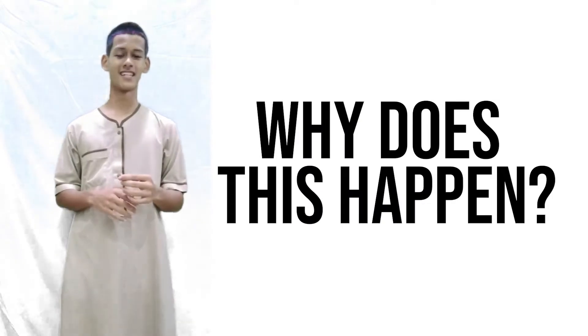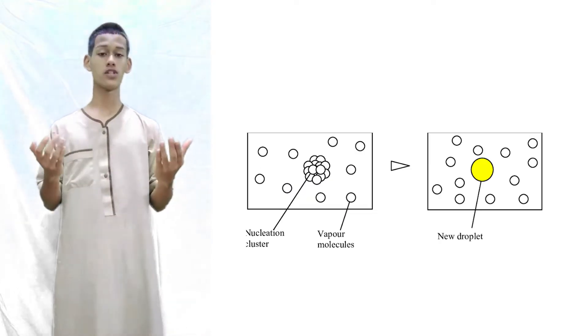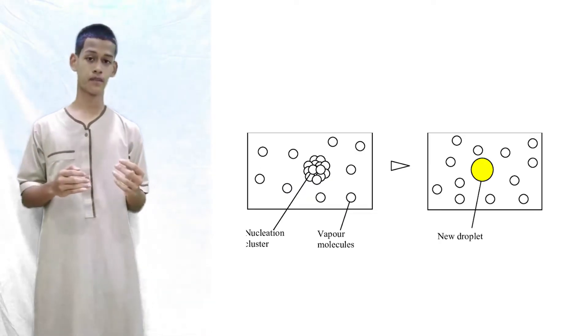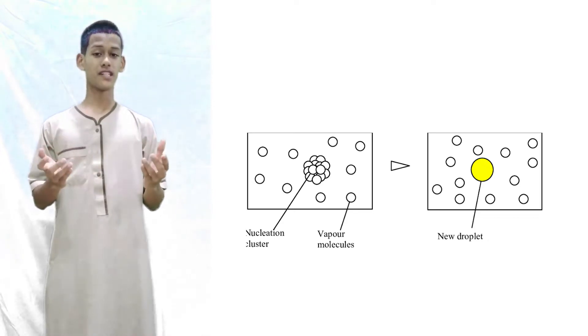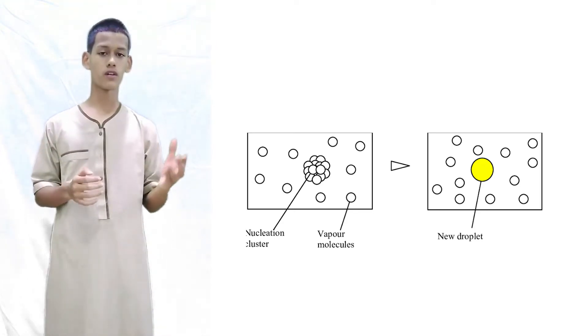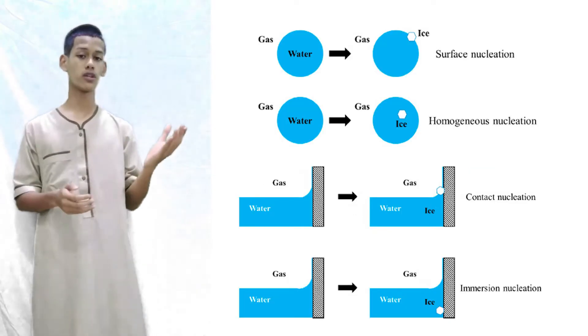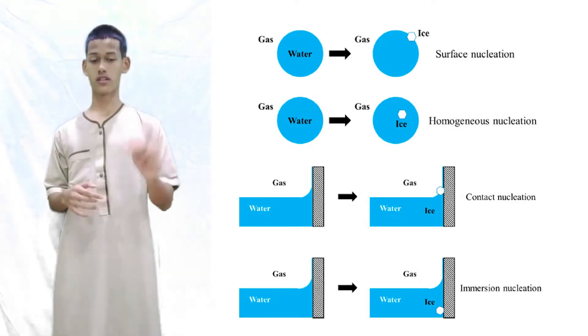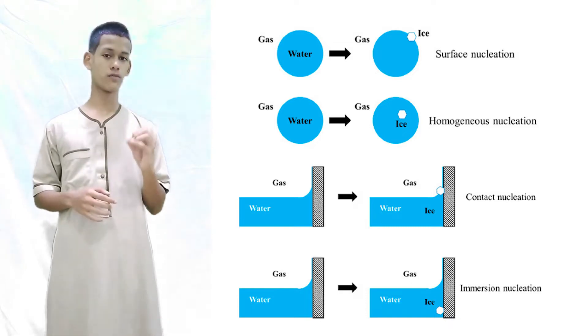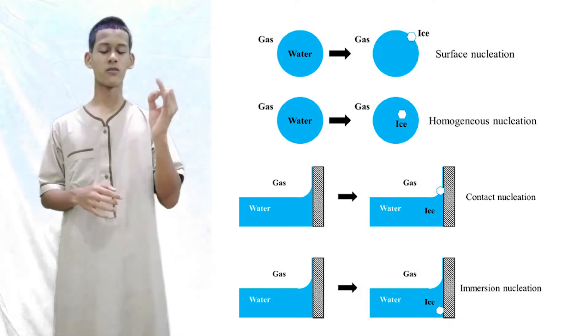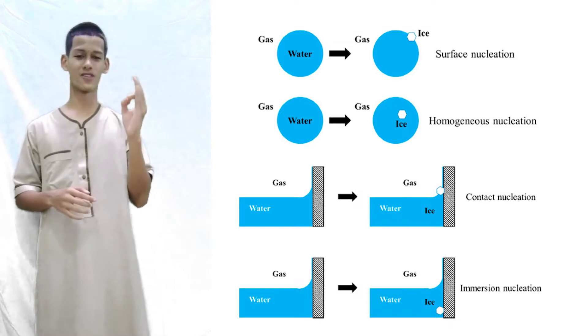Now, why does this happen? It has to do with the amount of energy in the water molecules. In a liquid state, the water molecules start moving around slowly and form loose bonds with each other. For a liquid to turn into a solid it needs two things: low energy, which can be achieved through cooling, and intermolecular bonds which starts from the nucleus.